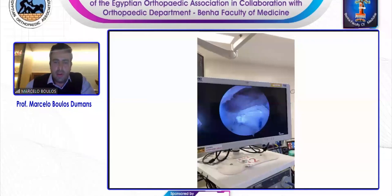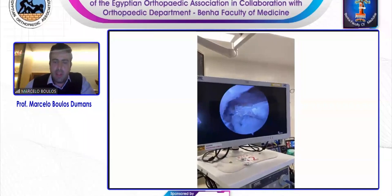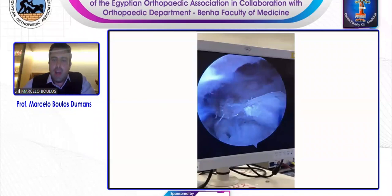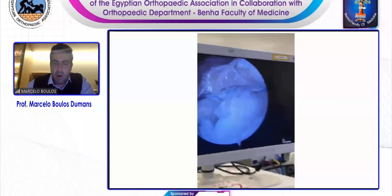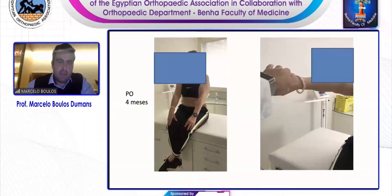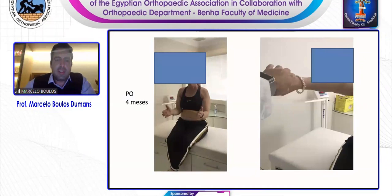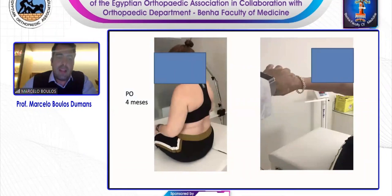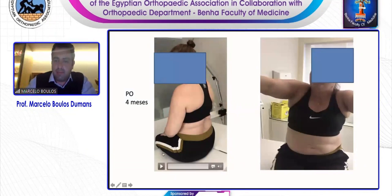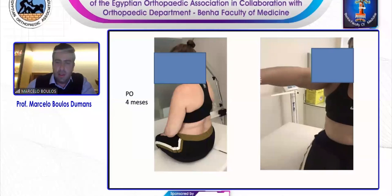We put the graft inside the joint first, tie it in the humerus, and then do the suture in the trap. This is the graft tied in the humerus. In this case, we can do a partial repair, but the quality of the tendon is not good — that's why it's better to address something more for the patient. This is the patient at four months from surgery. It's a good movement. She had pain and no strength before, so the relief of pain and improvement of strength is the goal. Thank you very much for the invitation.